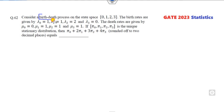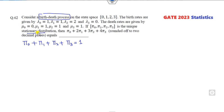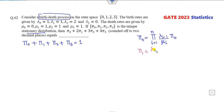Look at the next question. This is related to the birth-death process model and your target is to find the unique stationary distribution. The stationary distributions are pi_0, pi_1, pi_2, and pi_3. The sum of them equals 1 since it is a probability. The formula is: pi_n = (product from i=1 to n of lambda_{i-1} divided by mu_i) times pi_0. For pi_1 with n=1: it is lambda_0 divided by mu_1 times pi_0. With lambda_0 = 1 and mu_1 = 1, pi_1 = pi_0.